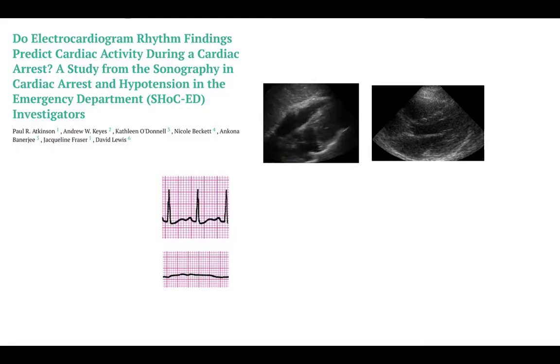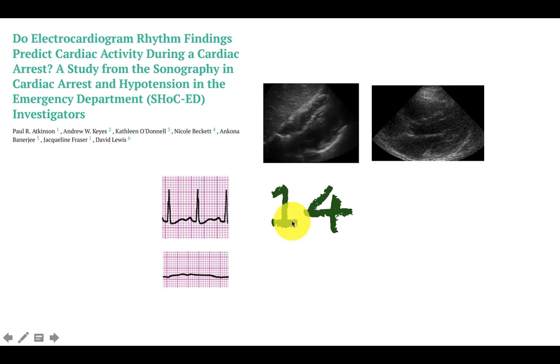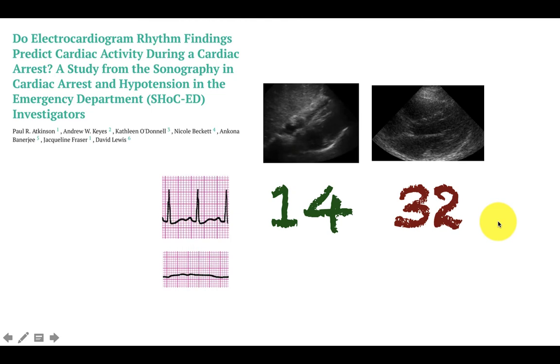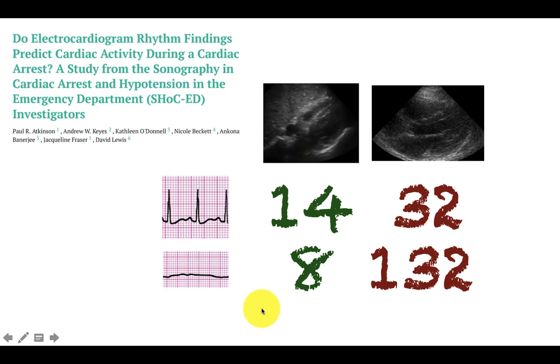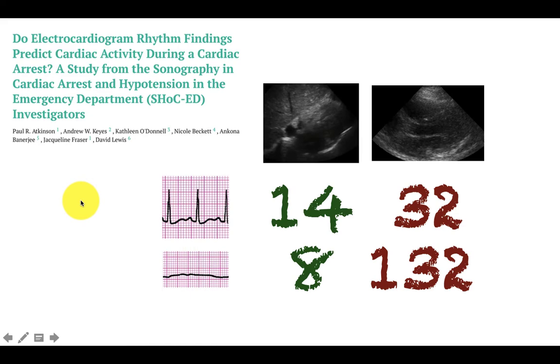We'll change gears now and talk about the use of ultrasound in the setting of cardiac arrest and how ultrasound can really change and guide management. We're all well aware that what's going on on the rhythm strip does not necessarily correlate with what's going on with the heart itself. This was a good review of patients from 2010 to 2014. Essentially, patients with electrical activity — 14 of them actually had cardiac activity by ultrasound, whereas 32 had none. Even more surprising: patients with a rhythm considered to be asystole — 8 actually had cardiac activity by ultrasound, and 132 had no activity. The takeaway is that the rhythm strip is not very sensitive or indicative of what's going on with the heart, and ultrasound can really help you figure that out.